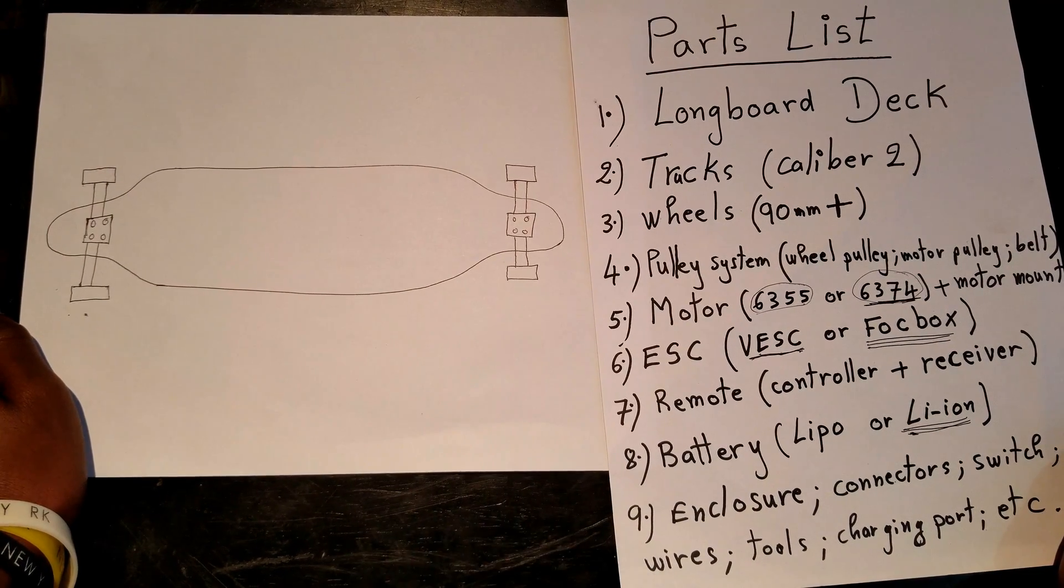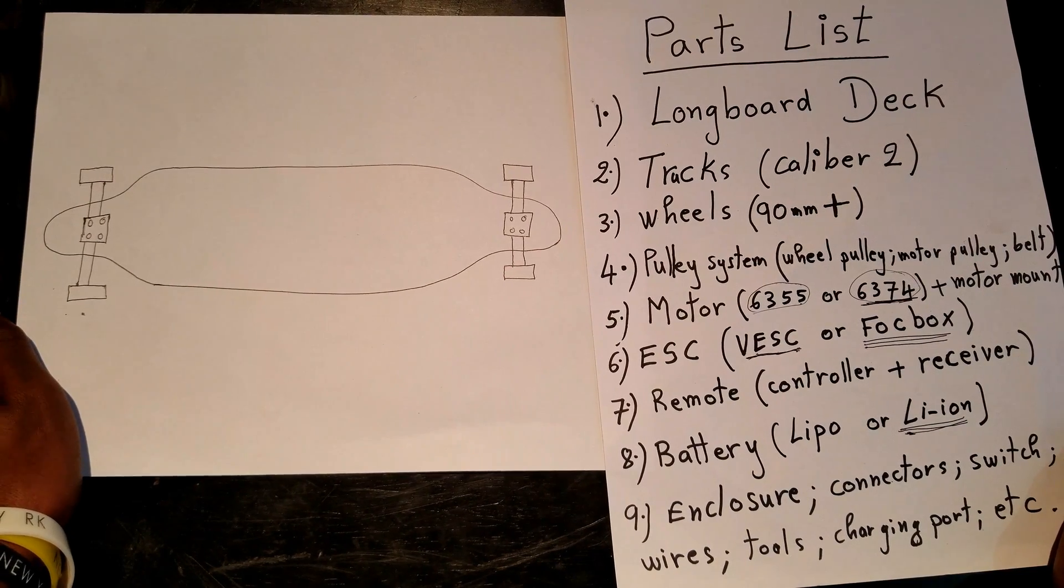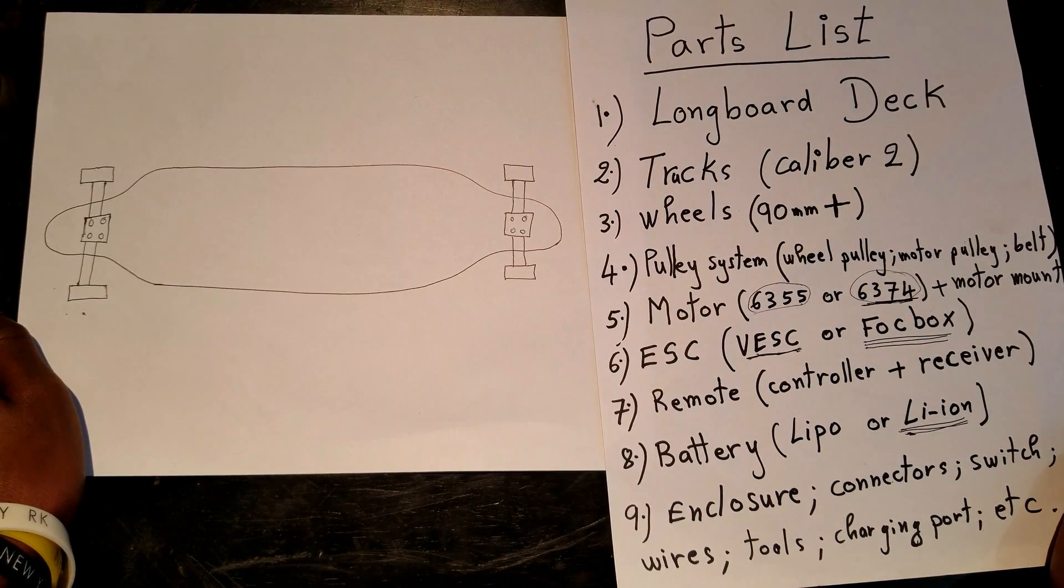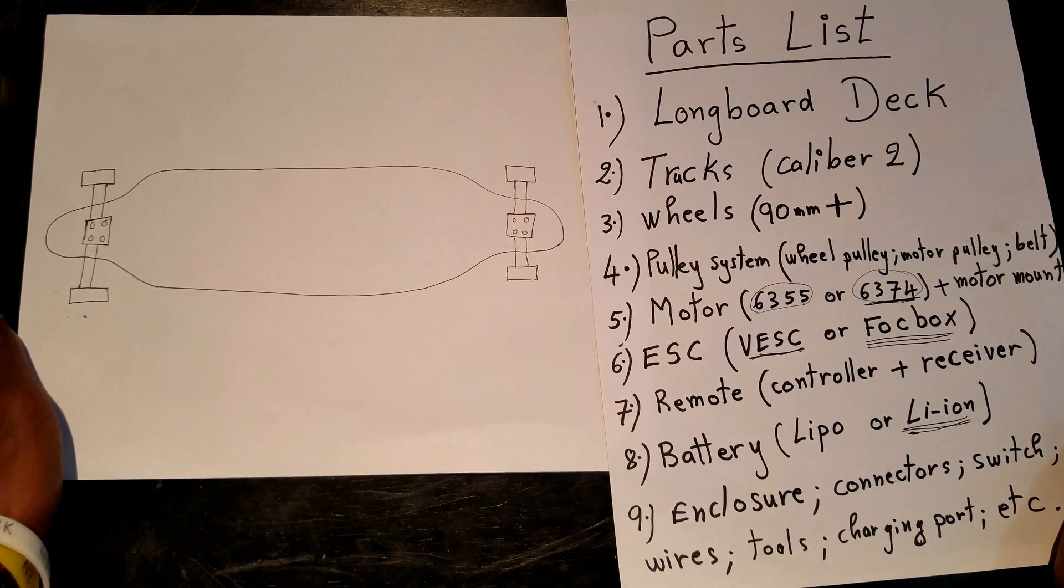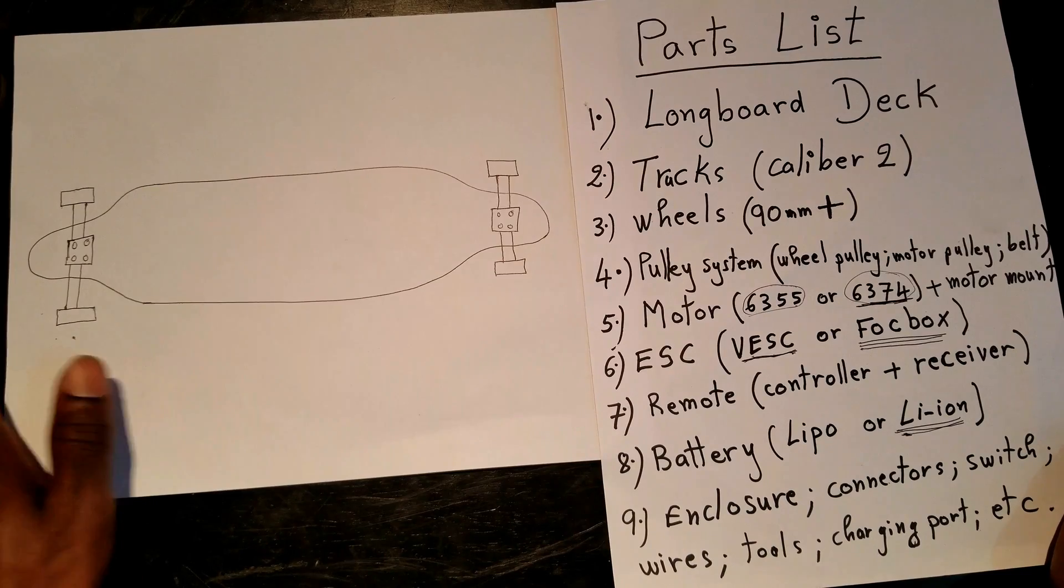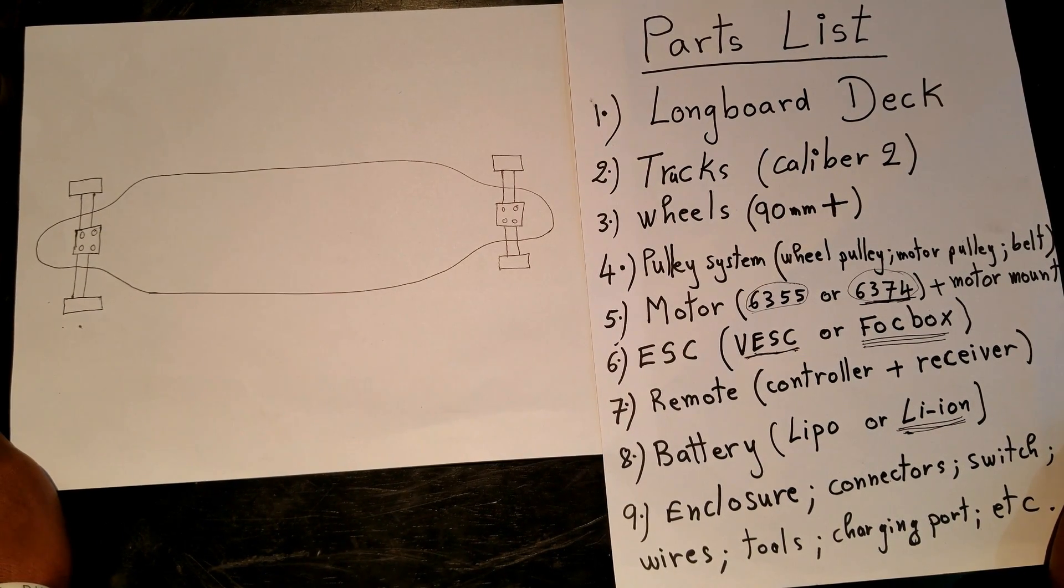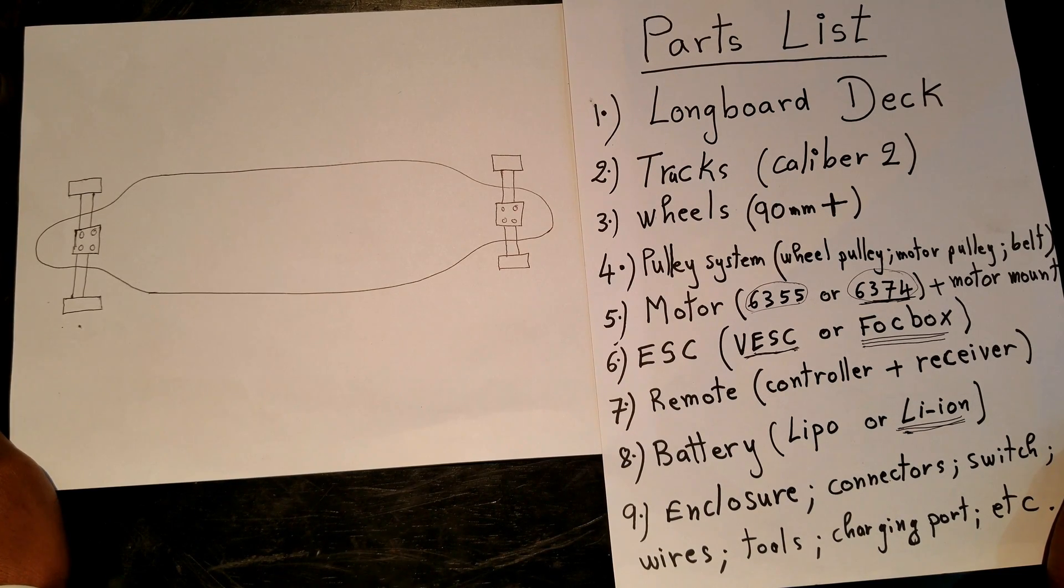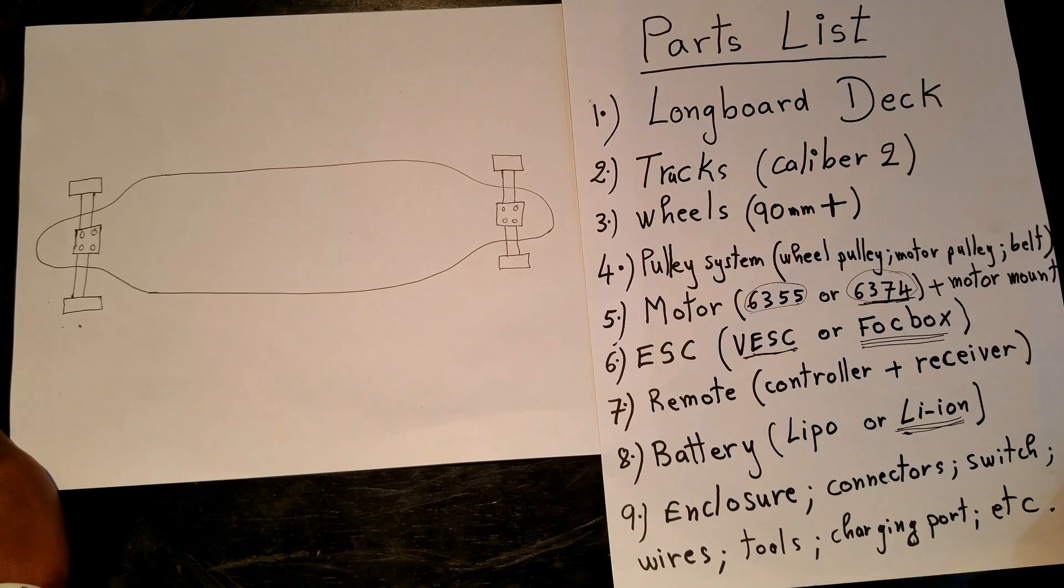Next is an enclosure. When you finish wiring everything, you want to put everything in one place and lock it, maybe seal it, make it a little bit water resistant. You can use an enclosure. A lot of people use full containers.